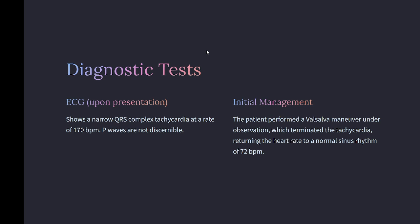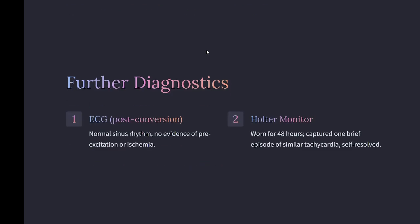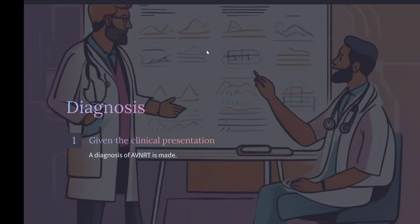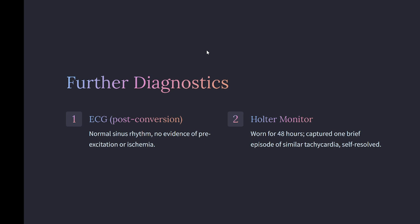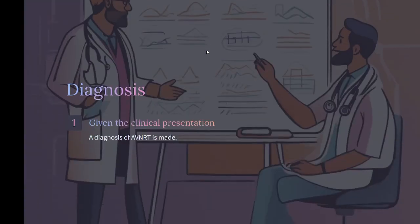Initial management: the patient performed a Valsalva maneuver under observation, which terminated the tachycardia, returning the heart rate to normal sinus rhythm of 72 BPM. Further diagnostics: ECG post-conversion showed normal sinus rhythm with no evidence of pre-excitation or ischemia. A Holter monitor worn for 48 hours captured one brief episode of similar tachycardia that self-resolved.